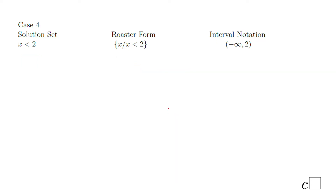Case four: x less than two. Roster form: x when x is less than two. You notice the interval notation — parenthesis, negative infinity, comma, two, parentheses, because we do not have the equal sign.